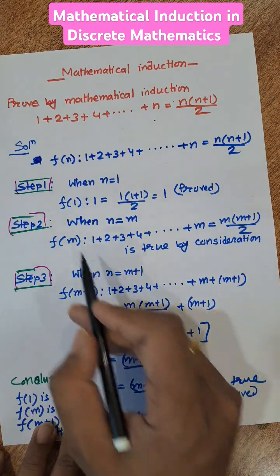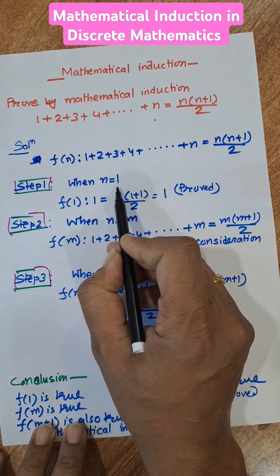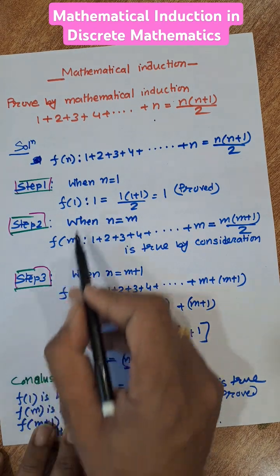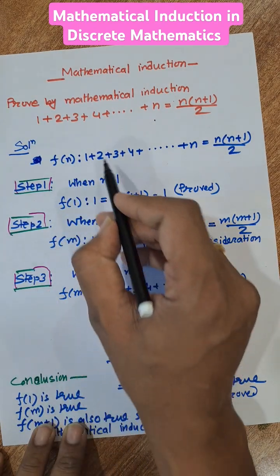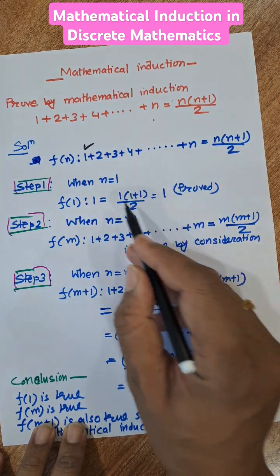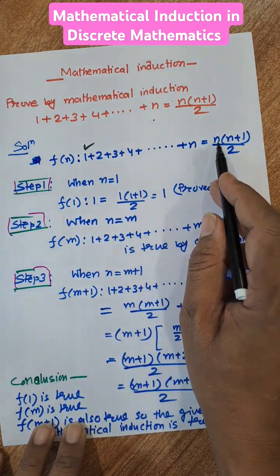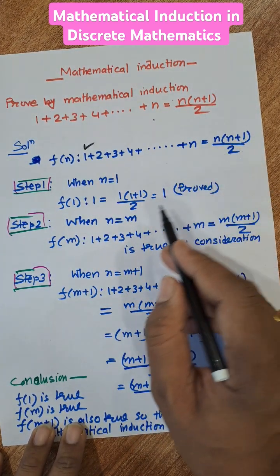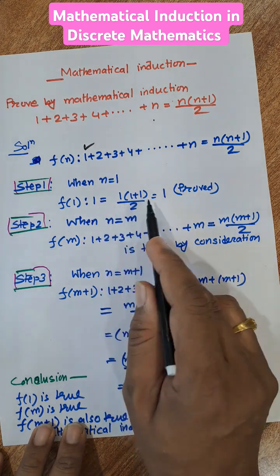There are three steps. Step 1 is when n equal to 1. When n equal to 1, then put the value of n equal to 1 here. The first term is 1 here, so 1 equal to 1 into 1 plus 1 by 2, that is 2 by 2 equal to 1. So 1 equal to 1, it is proved.